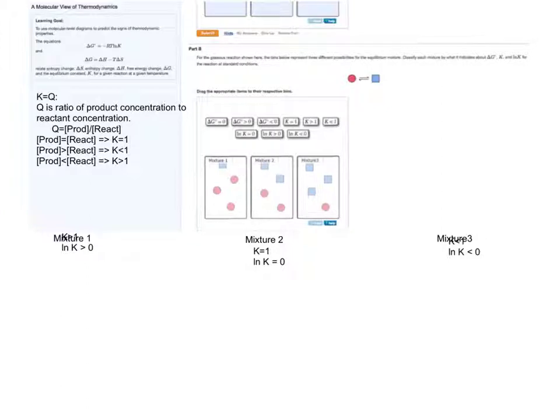In mixture 1, K is greater than 1. If we take the natural log of K, the answer to that would be a positive number, or greater than 0.